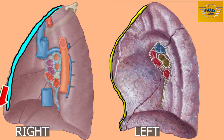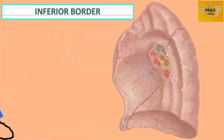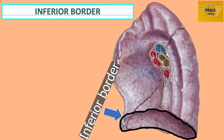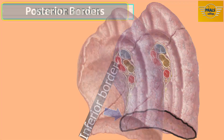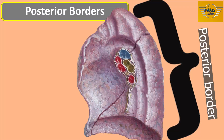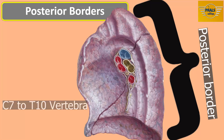Below this cardiac notch is a tongue-shaped projection of the lung called the lingula. The inferior border is also thin and sharp, circular in shape, located in the distal part of the lung, and separates the base from the costal and medial surfaces. The posterior border is thick and ill-defined as a result of its rounded nature, longer than the anterior border, and fits into the deep paravertebral groove or gutter. It separates the medial surface from the costal surface posteriorly, extending from C7 to T10.